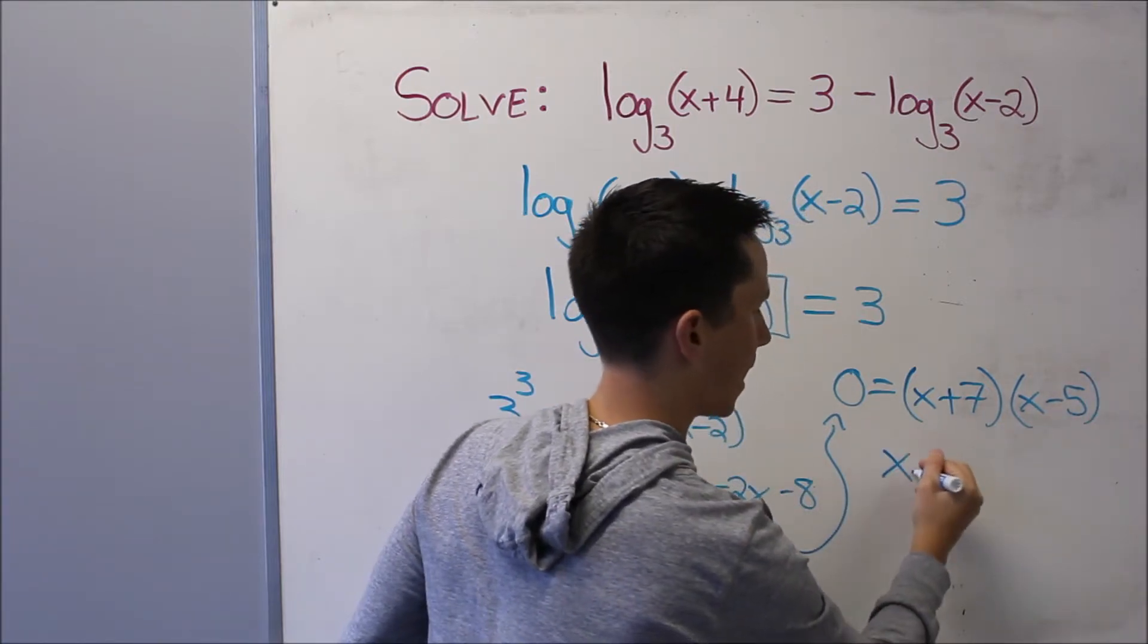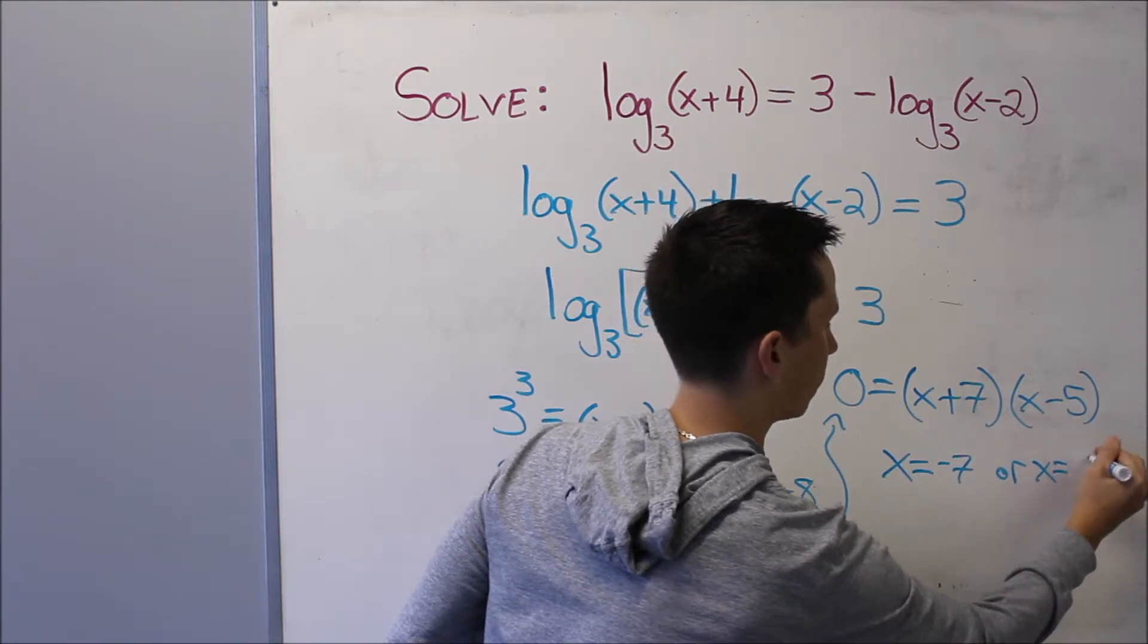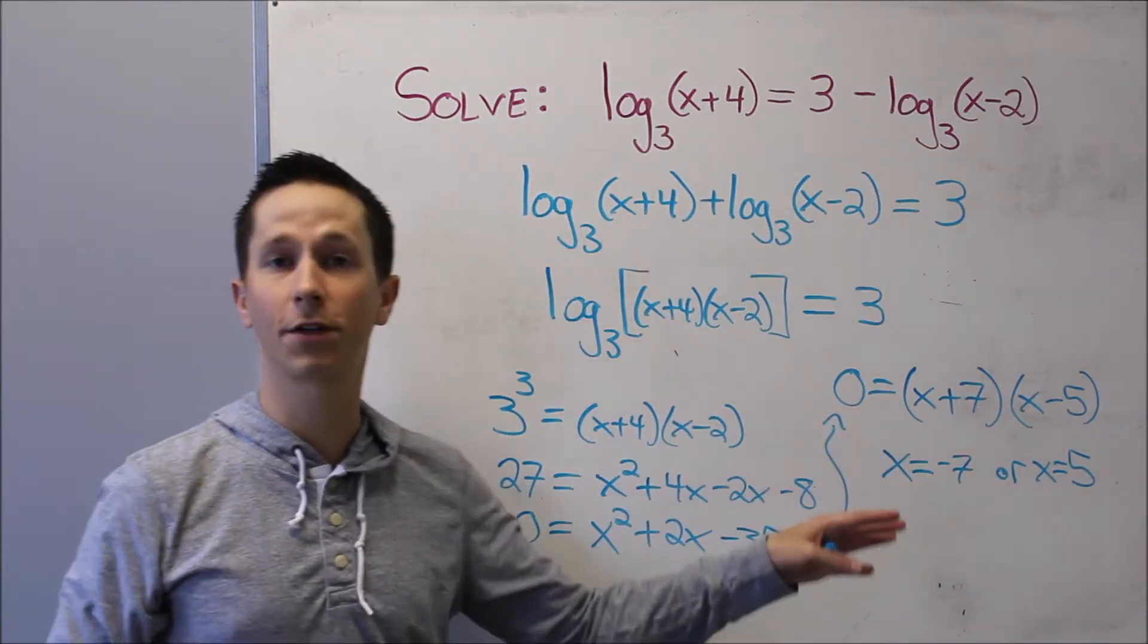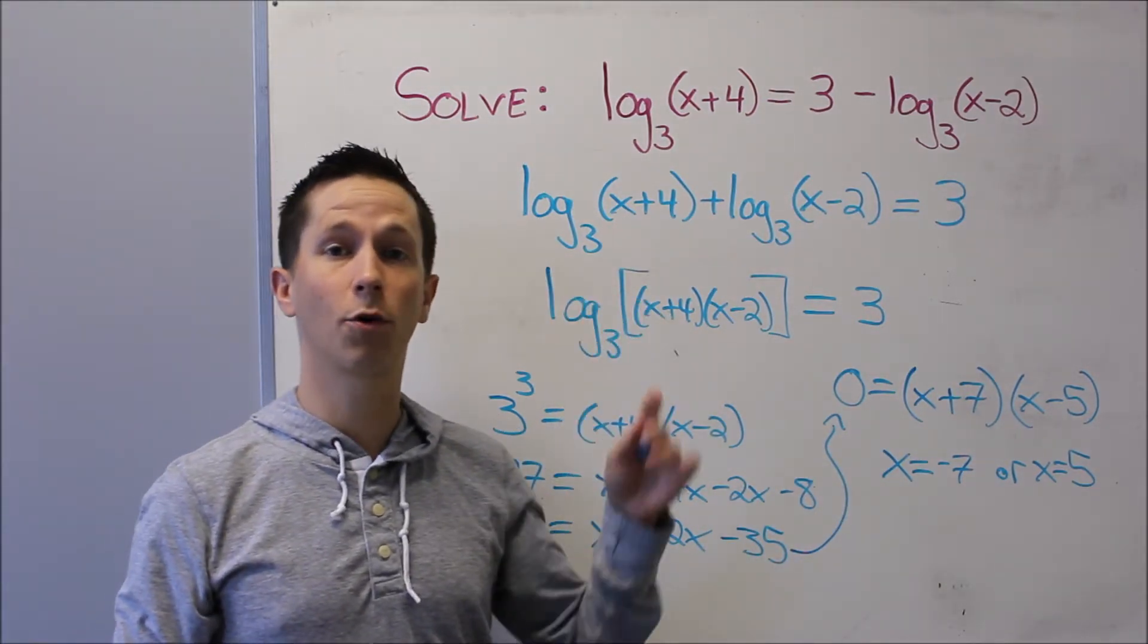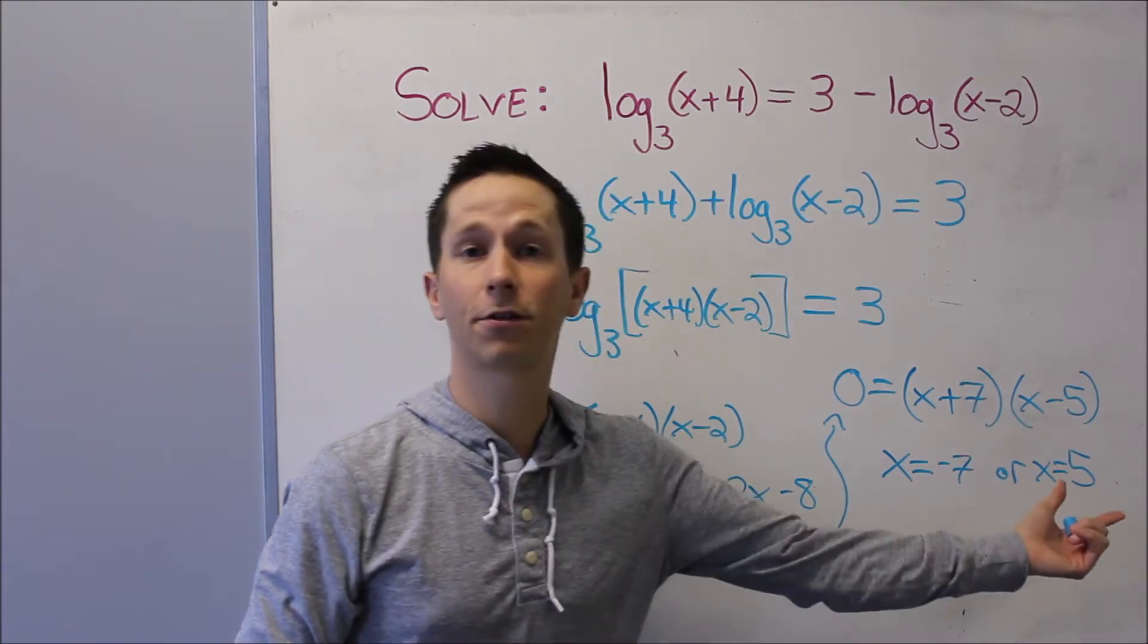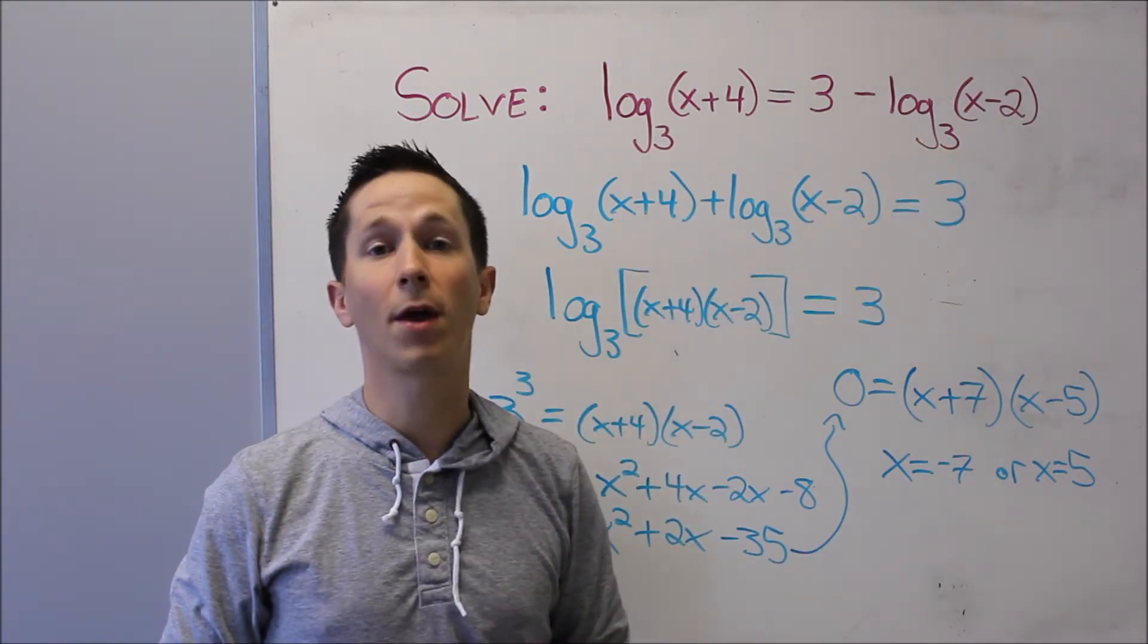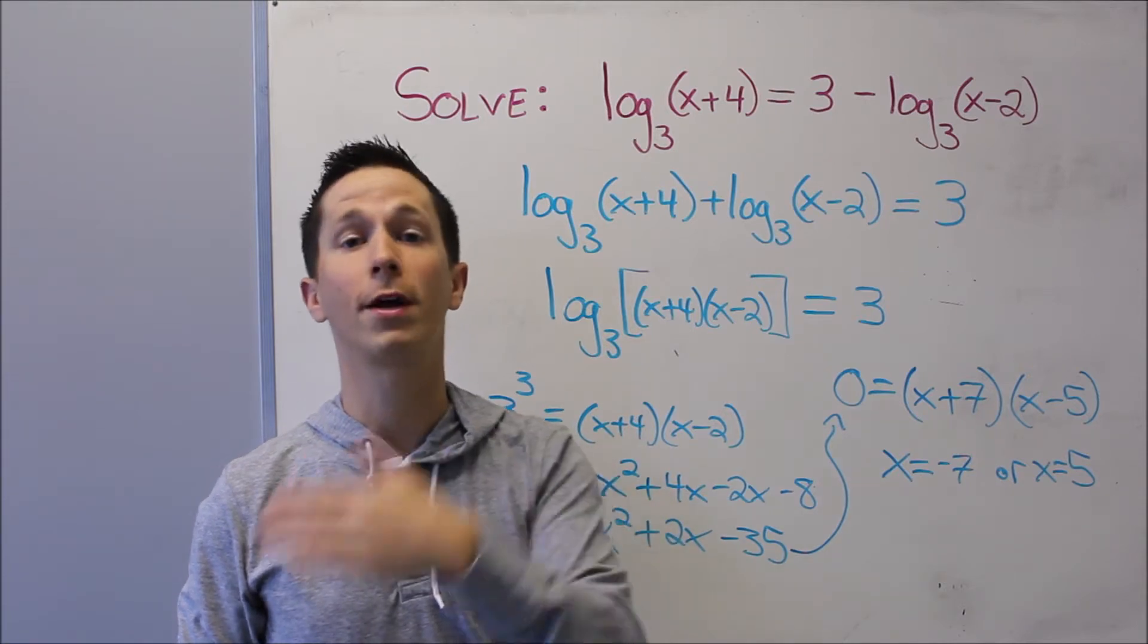So my answer is x equals negative 7, or x equals 5. Now, very important here, that's normally how we would solve this quadratic, and it's the correct way to solve the quadratic. But because it's a logarithm question, we always have to check our answers, meaning take your answers for x, sub them back into the beginning logarithms. We have to remember that we can only take the log of a number that's greater than 0.